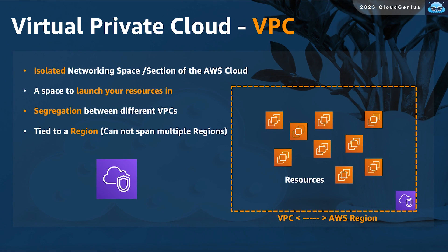The starting point for our discussion is a service called VPC, or Virtual Private Cloud. The VPC resembles an isolated networking space for a customer on AWS Cloud. Customers can create one or more VPCs to host their launched resources, which allows for resource segregation and controlling the boundaries of access.